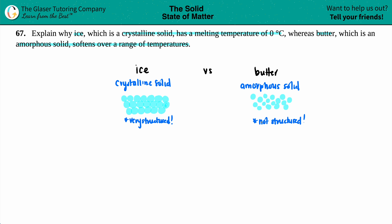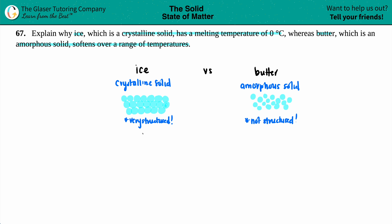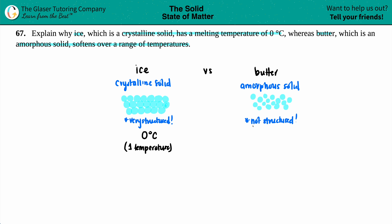They also gave us more information: ice is a crystalline solid and it has a melting temperature of just one temperature — it melts at zero degrees Celsius, one temperature. As opposed to an amorphous solid, there is no specific melting temperature. An amorphous solid melts at varying temperatures.